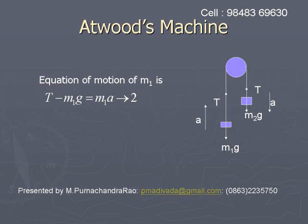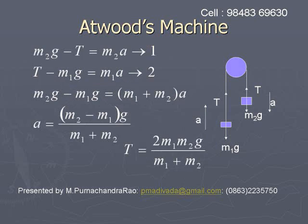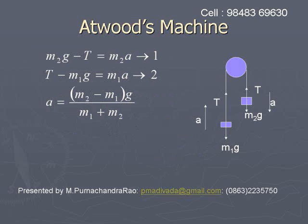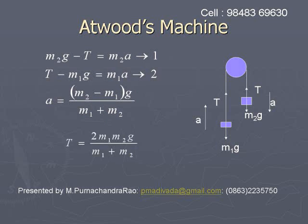By solving these two equations, we get the acceleration: a = (m2 − m1)g / (m1 + m2).